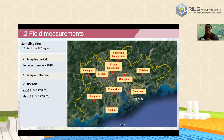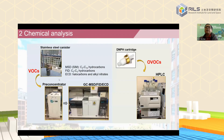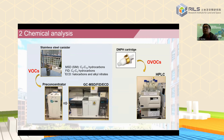We also conducted an intensive sampling campaign simultaneously in the PRD region, collecting 180 VOC and OVOC samples. Canisters are used to collect air — we suck the air into the canister, bring it back to the laboratory, and analyze C3–C10 hydrocarbons using a GC-MSD/FID/ECD system. For ECD we can analyze halocarbons and alkyl nitrates, and for OVOCs we use DNPH cartridges to collect samples and then use HPLC to analyze those species.